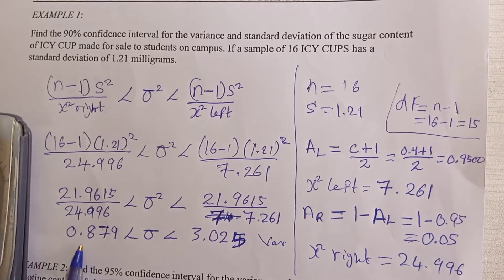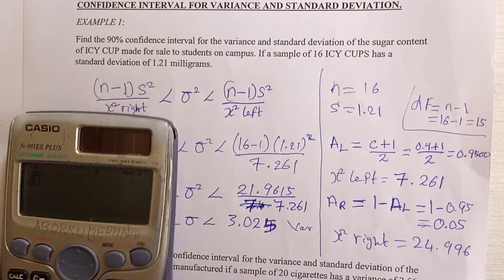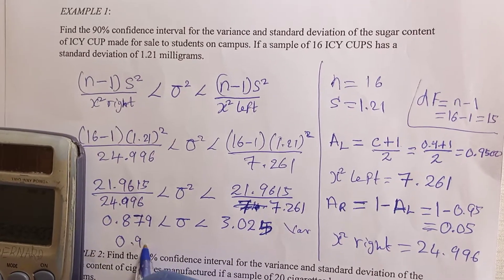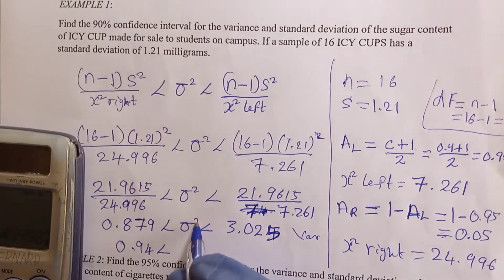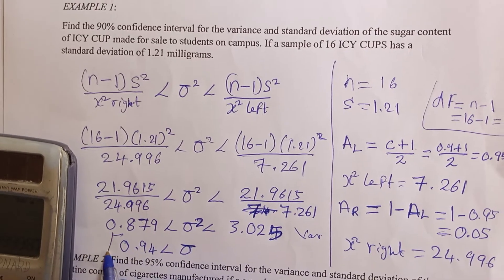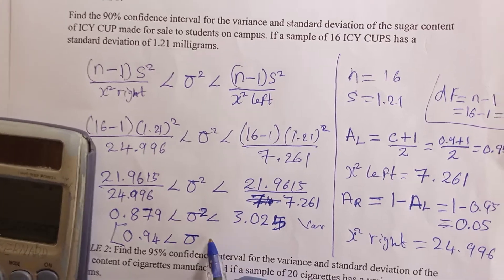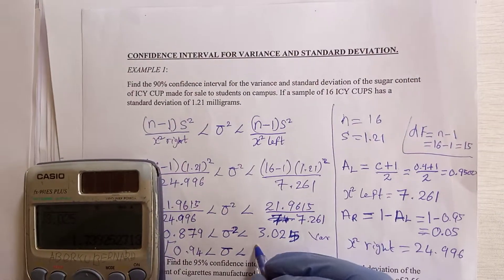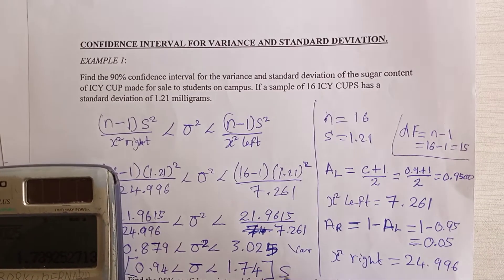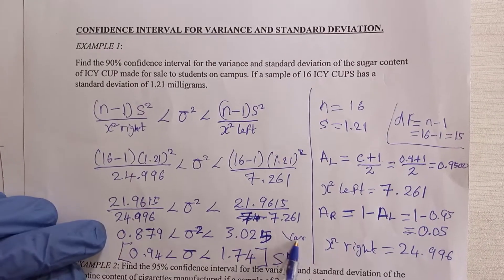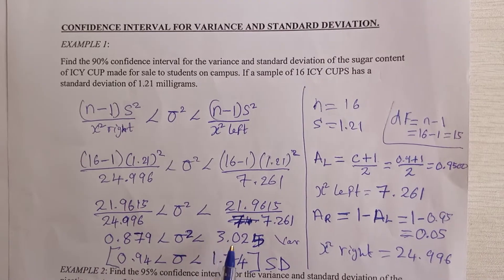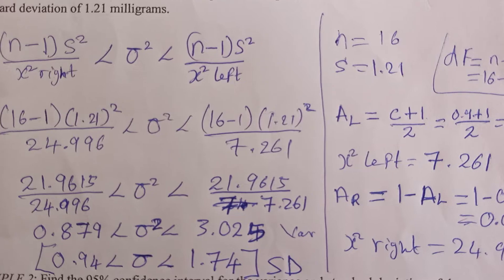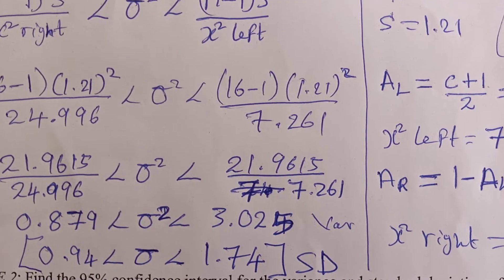To estimate the confidence interval for standard deviation, you take the square root of both sides. The square root of 0.879 is 0.94, and the square root of 3.025 is 1.74. So the confidence interval for standard deviation is: 0.94 less than σ less than 1.74. Now let's go to the second example.